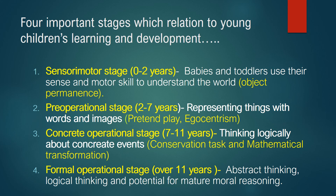There are four important stages relating to young children's learning and development, called Piaget's stage theory. The first is the sensorimotor stage: zero to two years. Babies and toddlers use their senses and motor skills to understand the world — object permanence begins to develop. Babies lick cups or cubes and kick with their hands or legs. They use their senses — eyes, ears, hands, nose — to understand the world. This is called the sensorimotor stage.